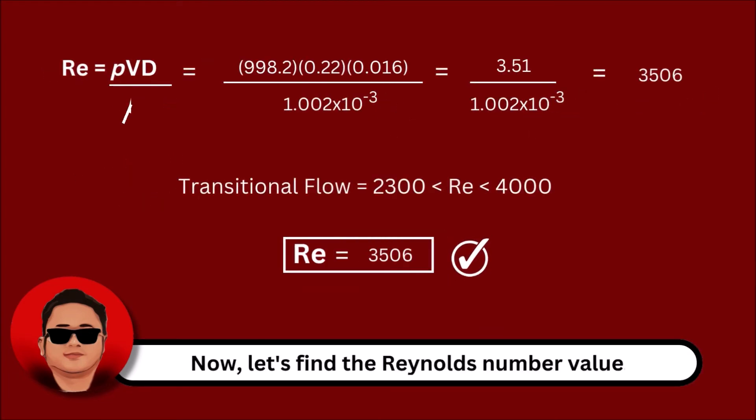Now, substitute again all the data into the equation. We've got a Reynolds number of 3506, which is more than 2300 and less than 4000. This indicates that the flow is transitional.